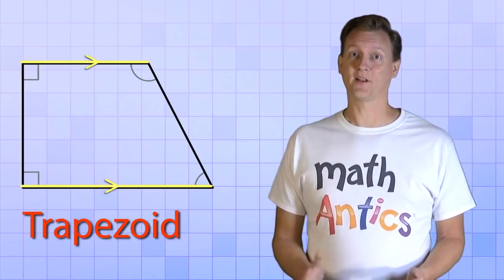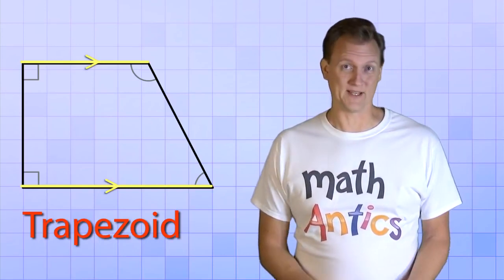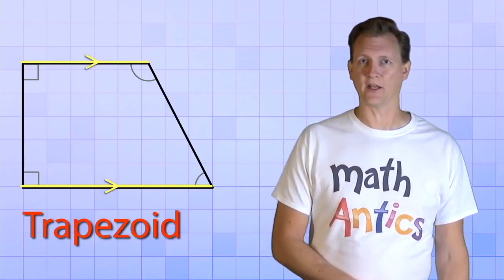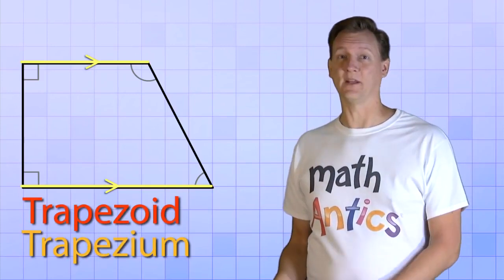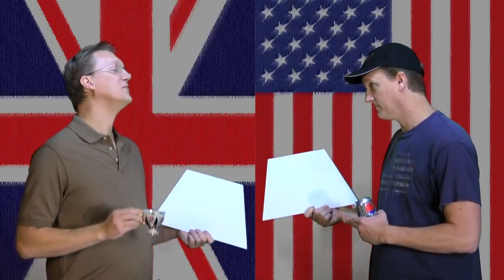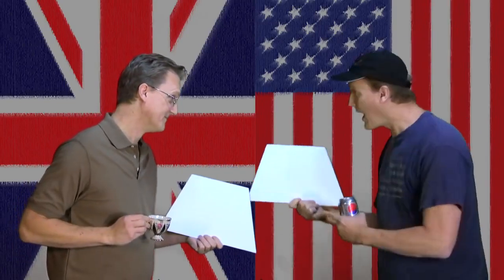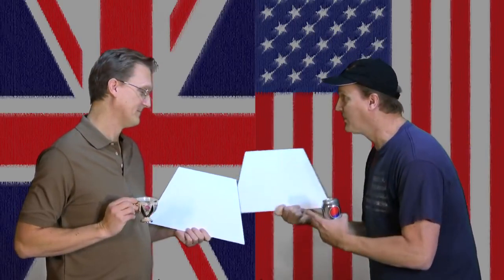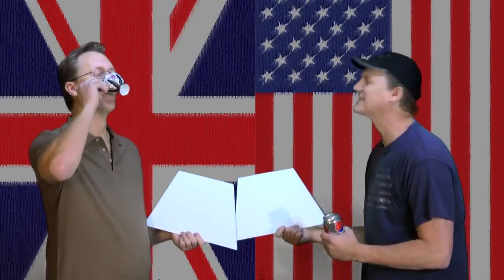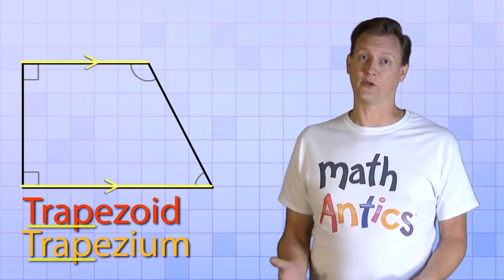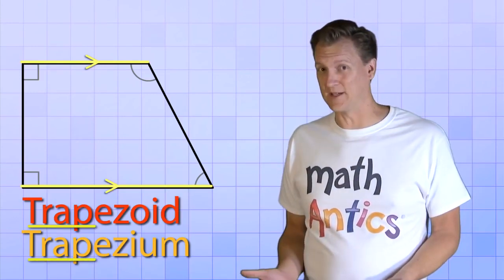Well actually, this is where classifying quadrilaterals gets a little messy, and that's because this sort of shape is called a trapezoid in America, but it's called a trapezium in other countries, like the UK. At least they both start with the word trap, so it's not too confusing… yet.